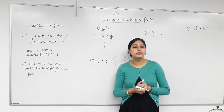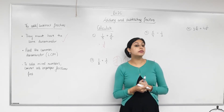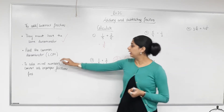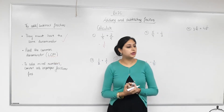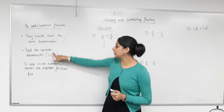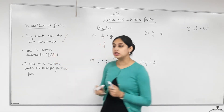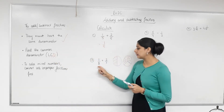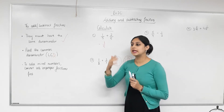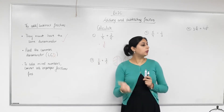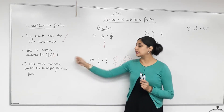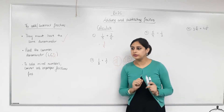When the denominators are not the same, we use our knowledge of equivalent fractions to convert them to a common denominator. The first thing we do is find the lowest common denominator — the LCD, which is the LCM of the two denominators. For example, the multiples of two are 2, 4, 6, 8, 10, 12... and the multiples of three are 3, 6, 9... The first common multiple is six, so our LCD is six.